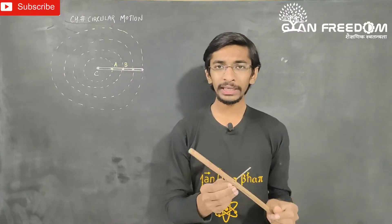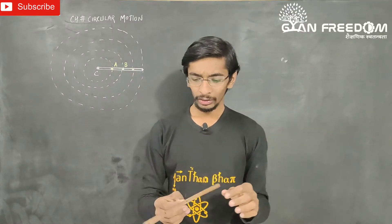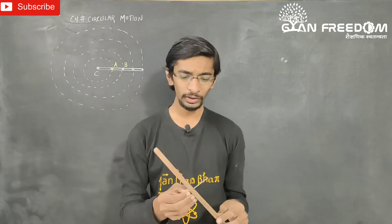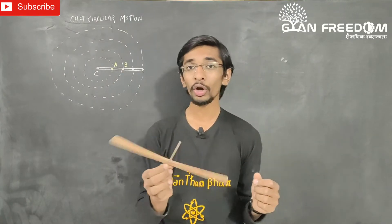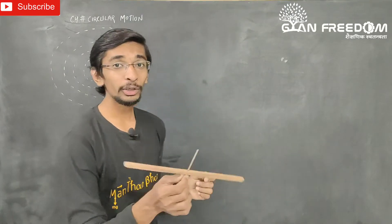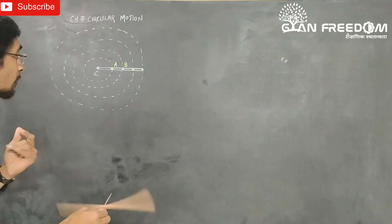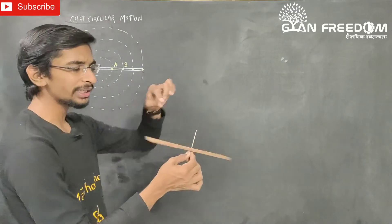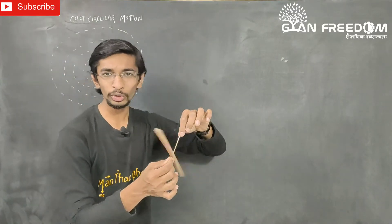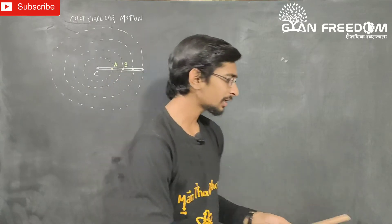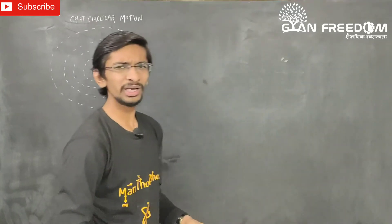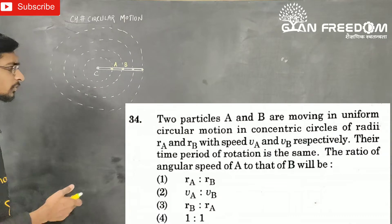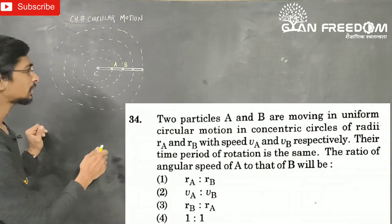Two particles are A and B, the radii are Ra and Rb, and the velocities are Va and Vb. The ratio of angular velocity is omega A divided by omega B. Since the particles are in circular motion and the time period is the same, the angular speed will be the same. So the answer is 1 to 1, Option D, the fourth option.